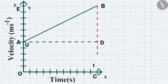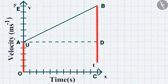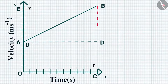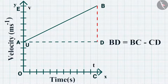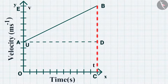Draw two perpendicular lines DC and BE from point B to the x-axis and y-axis respectively. Now OA is initial velocity, BC is final velocity, and OC is time interval t. The change in velocity is shown by the line BD, where BD = BC - CD. Now draw a line AD parallel to OC. From the graph, BC = BD + DC = BD + OA.